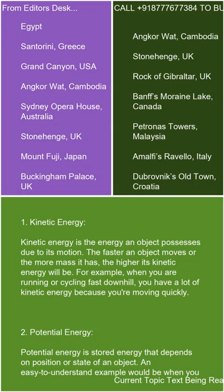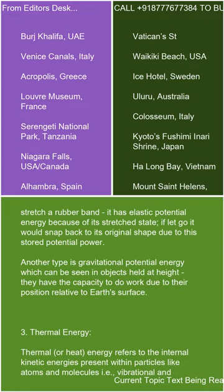2. Potential energy. Potential energy is stored energy that depends on the position or state of an object. An easy-to-understand example would be when you stretch a rubber band — it has elastic potential energy because of its stretched state. If let go, it would snap back to its original shape due to this stored potential energy. Another type is gravitational potential energy, which can be seen in objects held at height; they have the capacity to do work due to their position relative to Earth's surface.